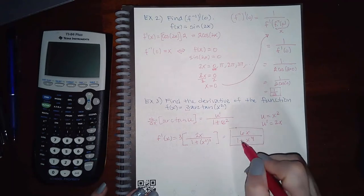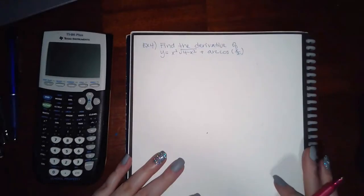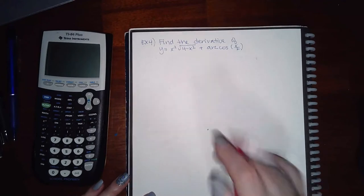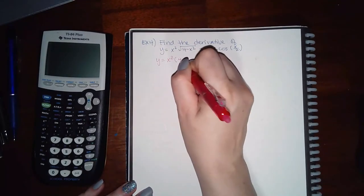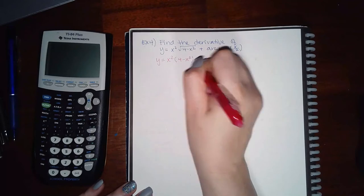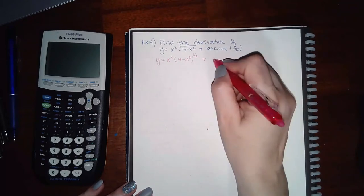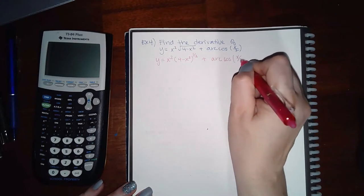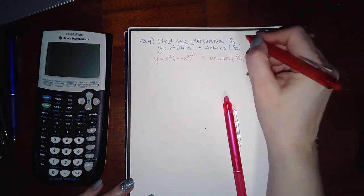This ends up being 6x over 1 plus x to the fourth, and I cannot reduce that any further, so that is the final answer for Example 3. They do get a little more complicated — here, Example 4 says find the derivative of this function. If I rewrite it, the first term requires me to use the product rule, and then I'll have to use my rules for inverse trig functions for the second term.